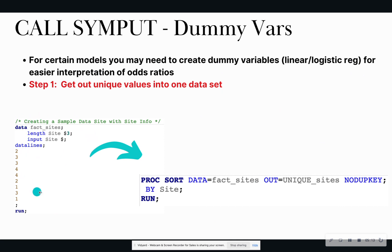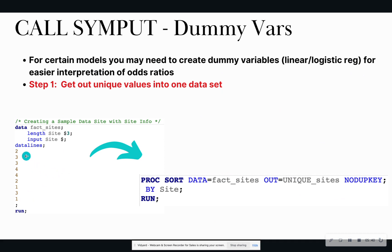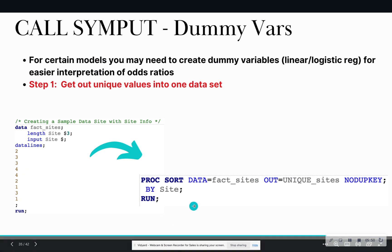The first thing is to get the data set you want to work with, then get out the unique values. I'm doing a proc sort and sorting the data set I created, outputting a data set called unique_sites. The no-dupe-key option means I don't want any duplicates, because in my data set I have tons of duplicates — more than one row of data for every factory, for example three rows for factory three and two rows for factory four. I want to get out the unique levels.